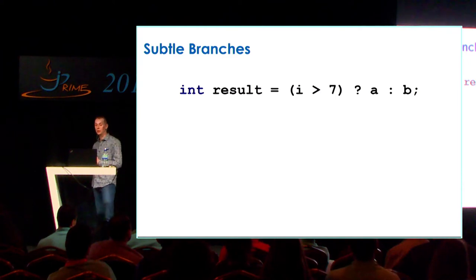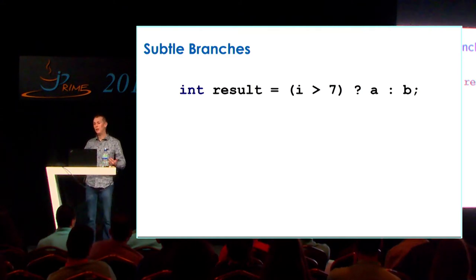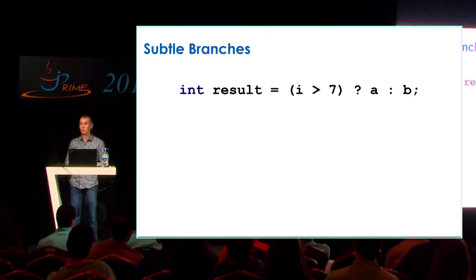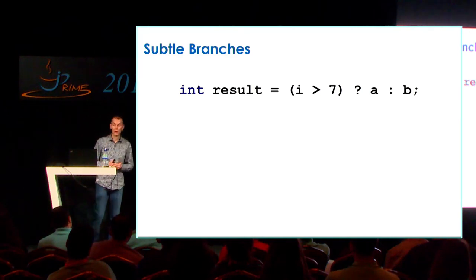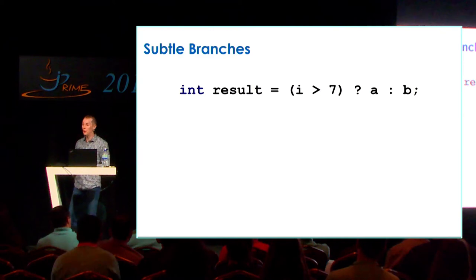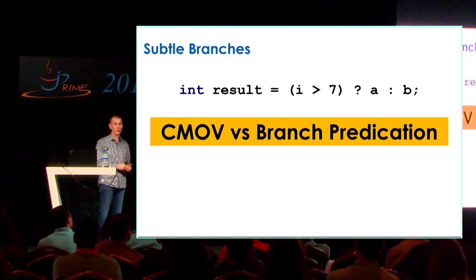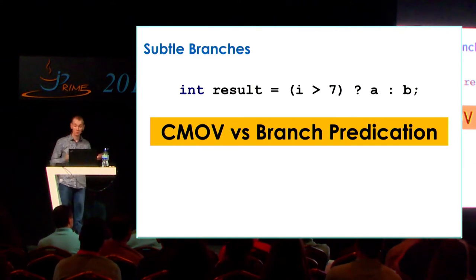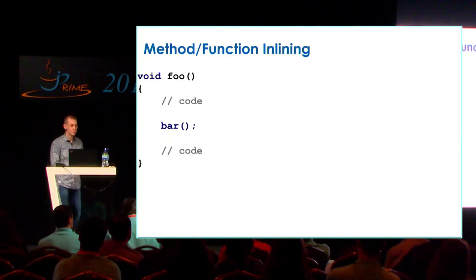Branches can be even more subtle. A simple ternary expression — if i is greater than 7 use value A, otherwise use value B — if i is 95% of the time greater than 7, the branch predictor does well. But if it's 50-50, it gets it wrong as often as right. x86 has an instruction called CMove — a conditional move without a branch — and we can choose to use that based on profile-guided optimization. Our runtime can do that for us. Java does this out of the box.